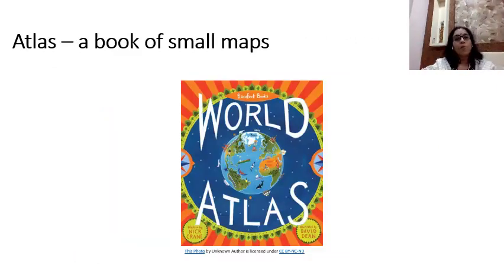Now children, what is an atlas? View this picture. You can see a book. This is a book of small maps. An atlas is a collection of maps. You can find different types of maps in an atlas.